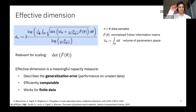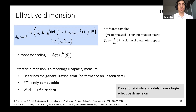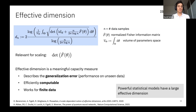Now that we have the effective dimension, we can go back to our original question: comparing the classical statistical model with the quantum neural network model. If the effective dimension is a meaningful capacity measure, then powerful statistical models have a large effective dimension. We can compute the effective dimension for the classical model and compare how it relates to the quantum model.